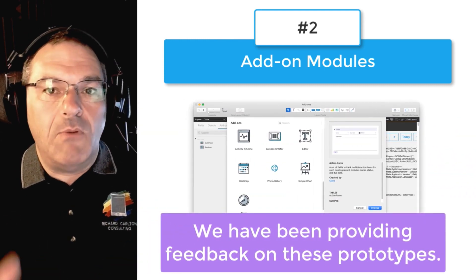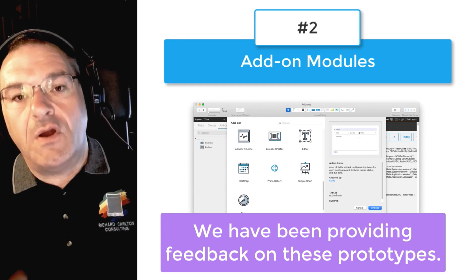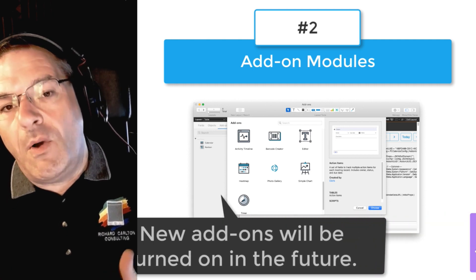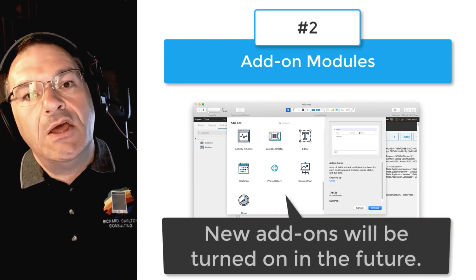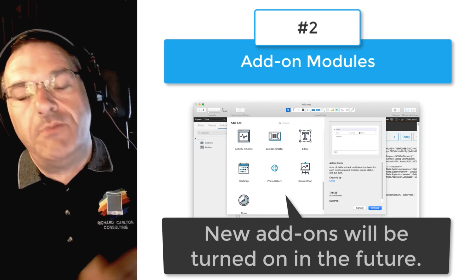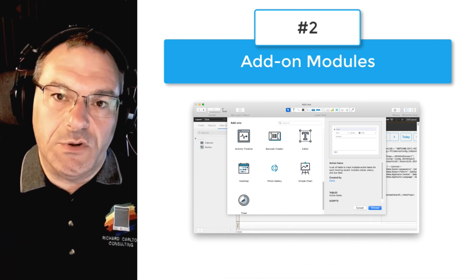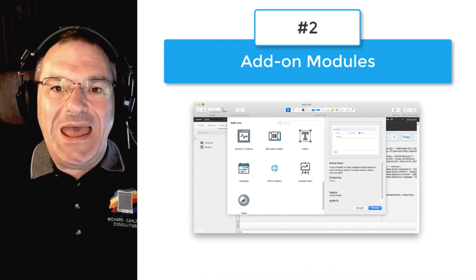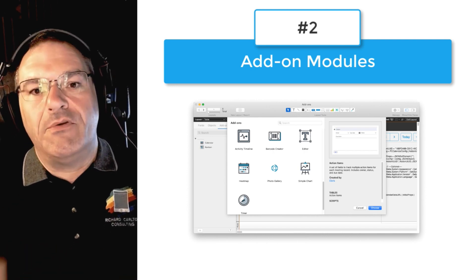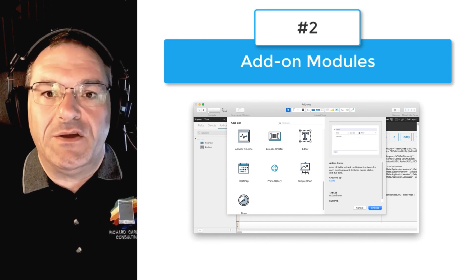We've been playing with prototype add-on modules for a number of months, providing feedback to Claris. Starting with the 19 release, this capability is now being turned on. As the months go on, you're going to see new add-on modules being enabled, which will allow you to drag and drop those onto your FileMaker custom app. This is a huge deal in the world of FileMaker because being able to easily drag and drop a capability — with tables, fields, scripts, layout objects, and all these sorts of things — was just really difficult to do, and now it's becoming much easier.